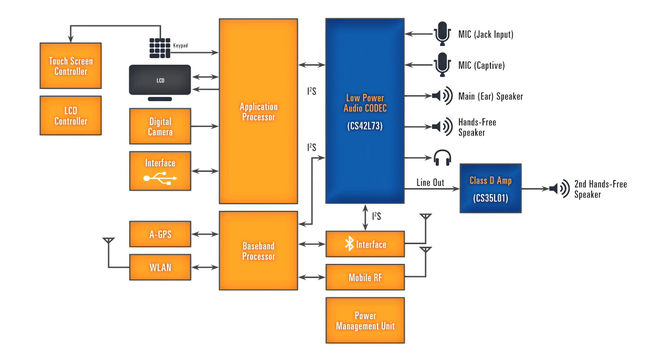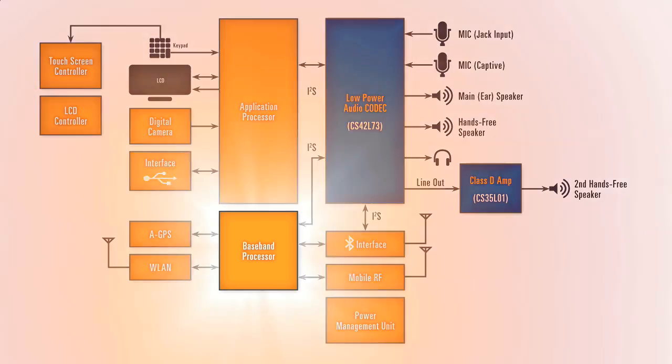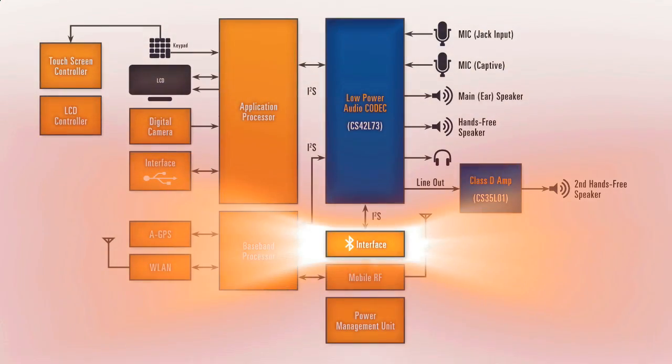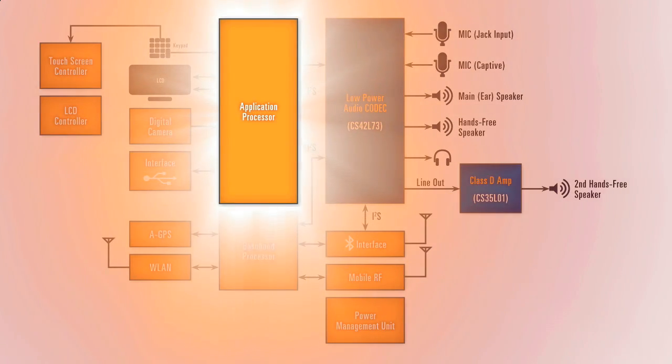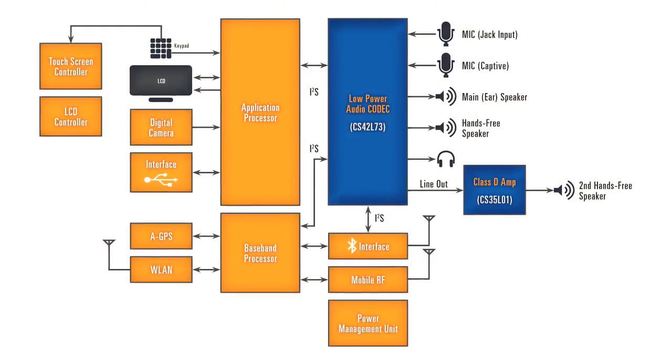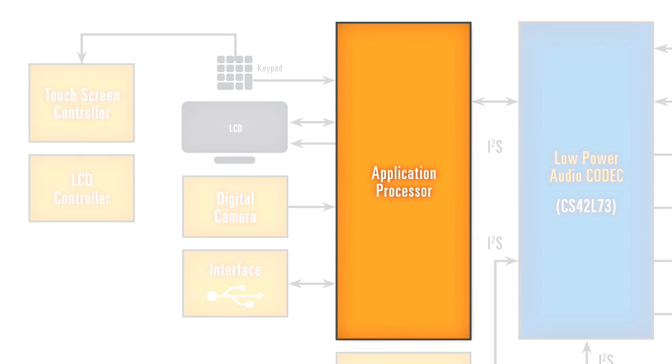First, let's take a look at the system level block diagram for a smartphone. You have your baseband processor, your Bluetooth processor, and of course your applications processor. The applications processor is the heart of the computing power that is today's smartphones.